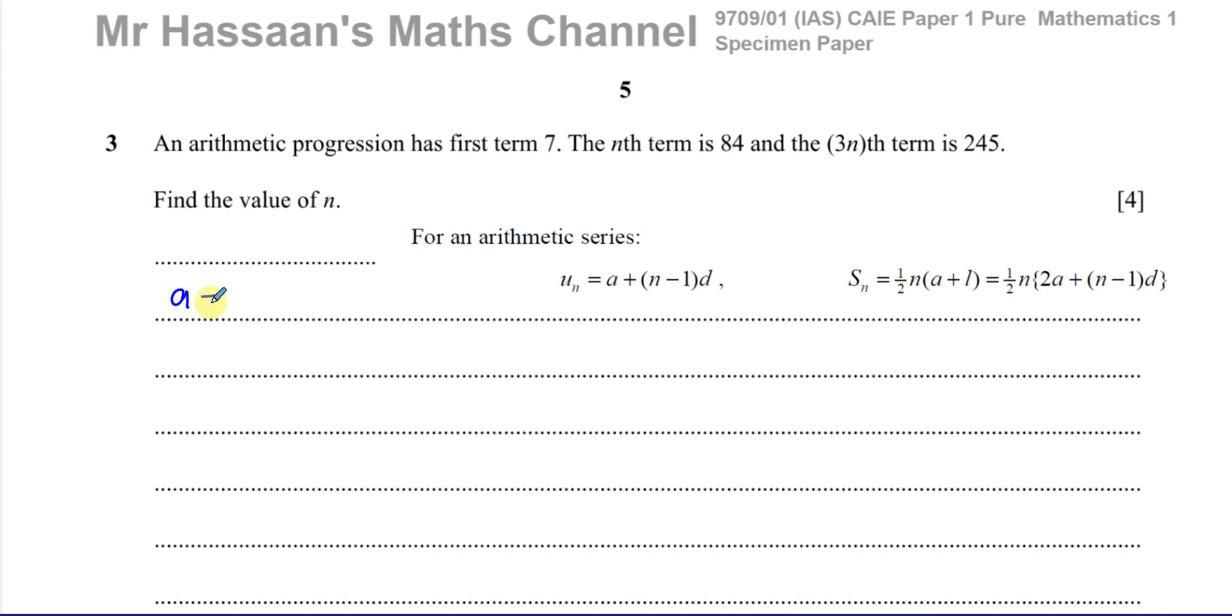And d stands for the common difference, which we don't know. And n stands for the particular term that we're on. So in the first instance, we're told that the nth term is 84. So we're told that un is 84. So here we have 84 equals 7 plus n minus 1 times d. So that's the information that we can take from this first situation here.